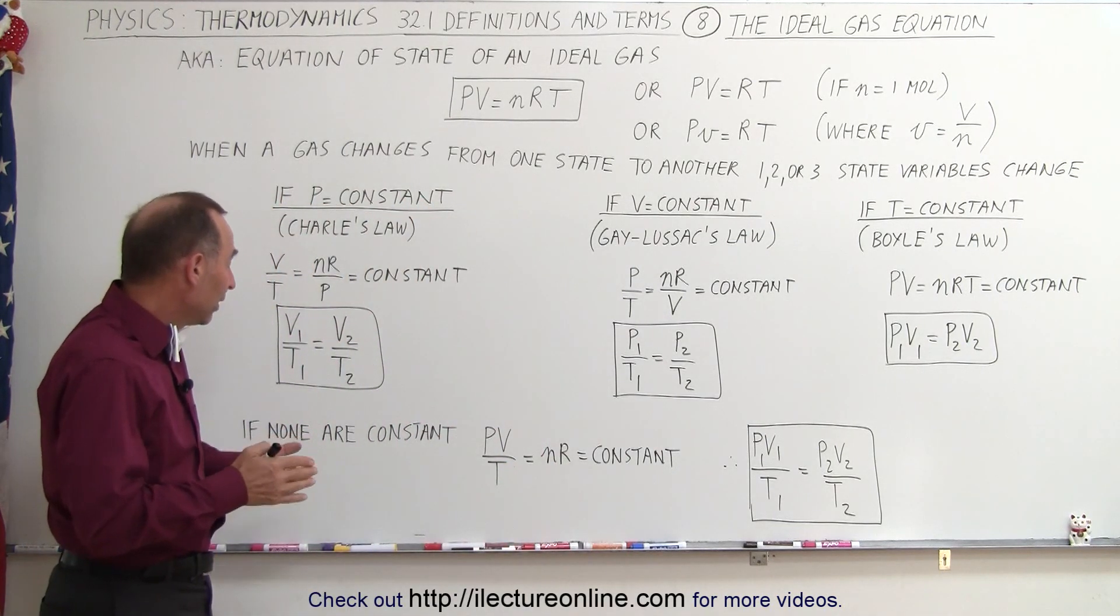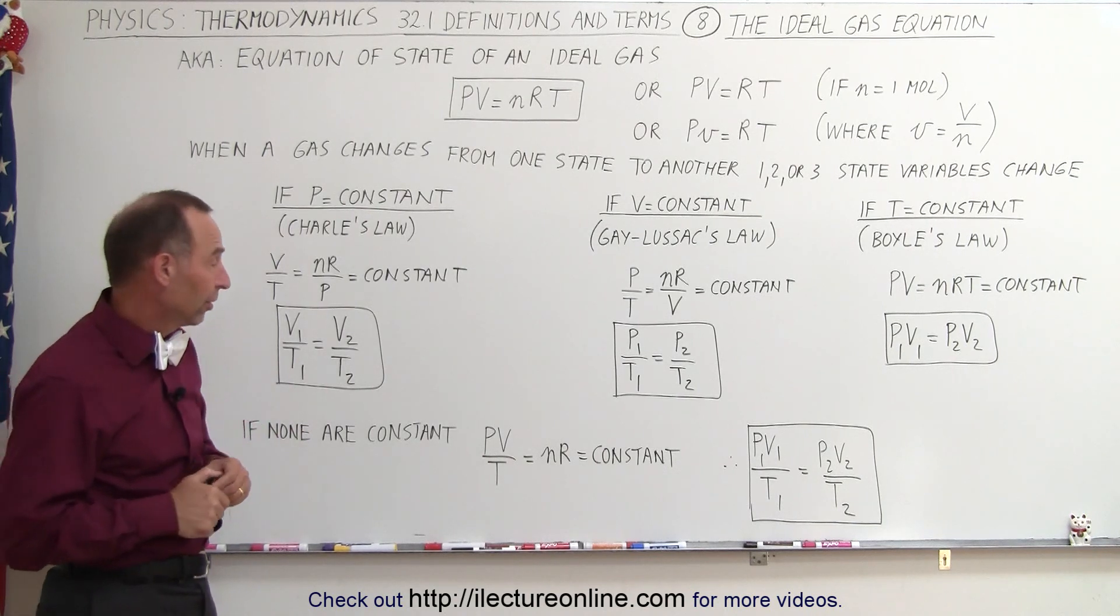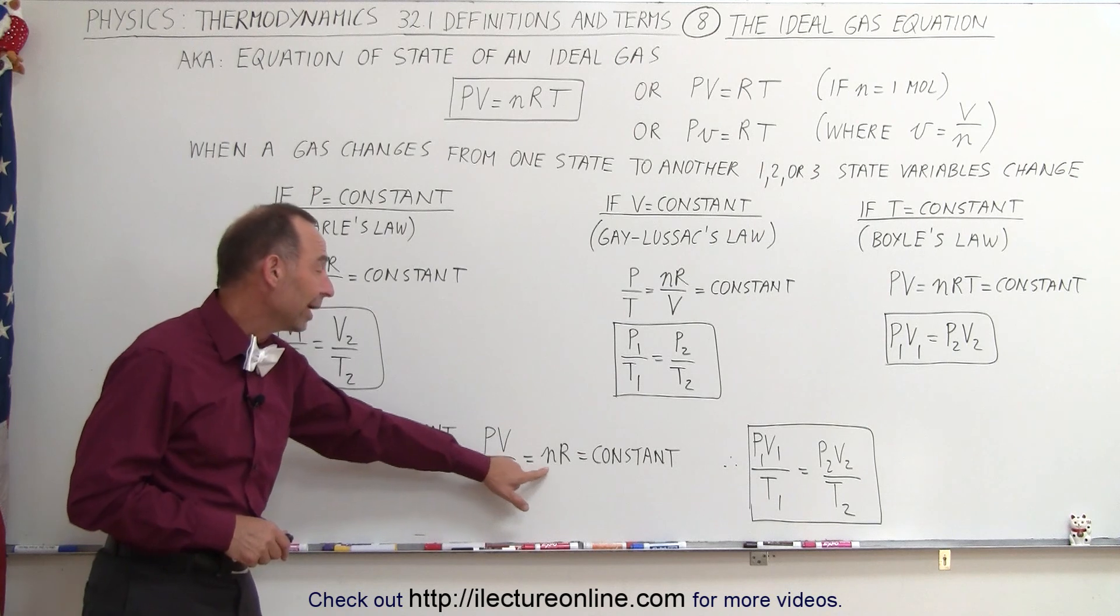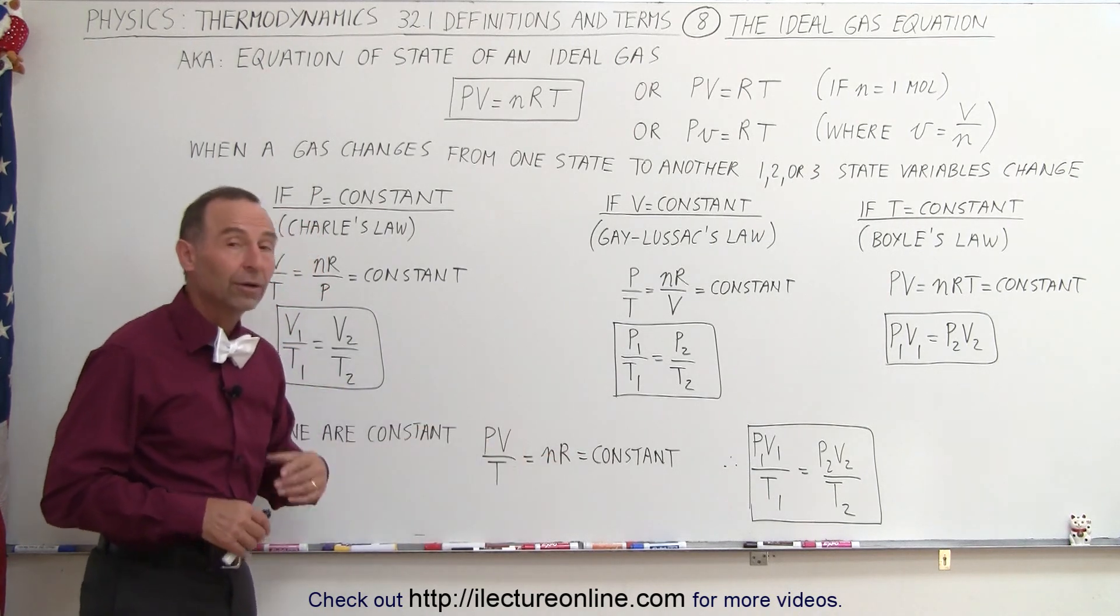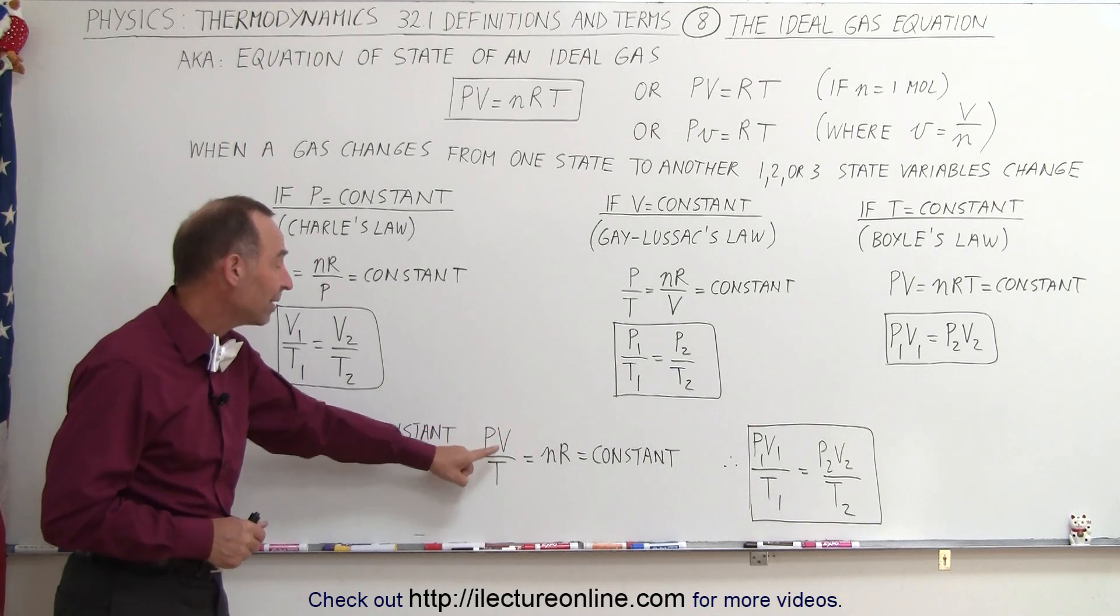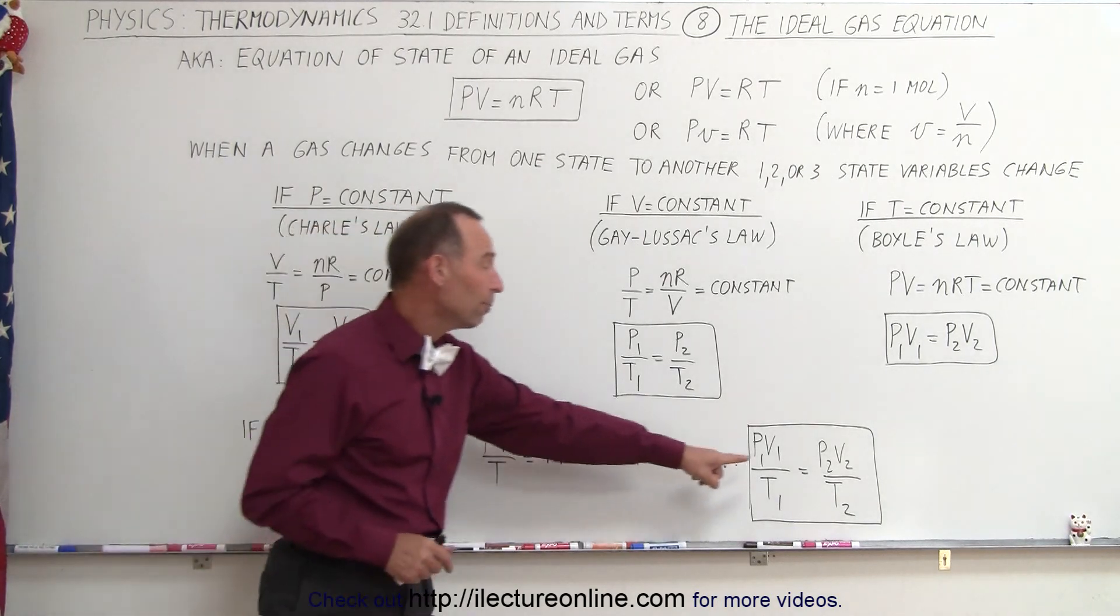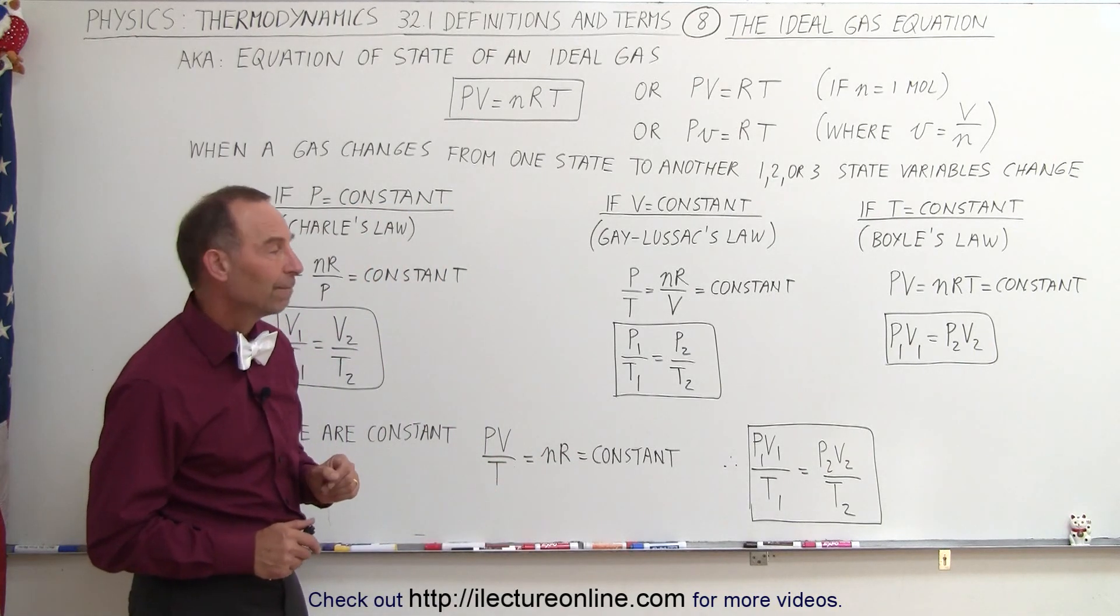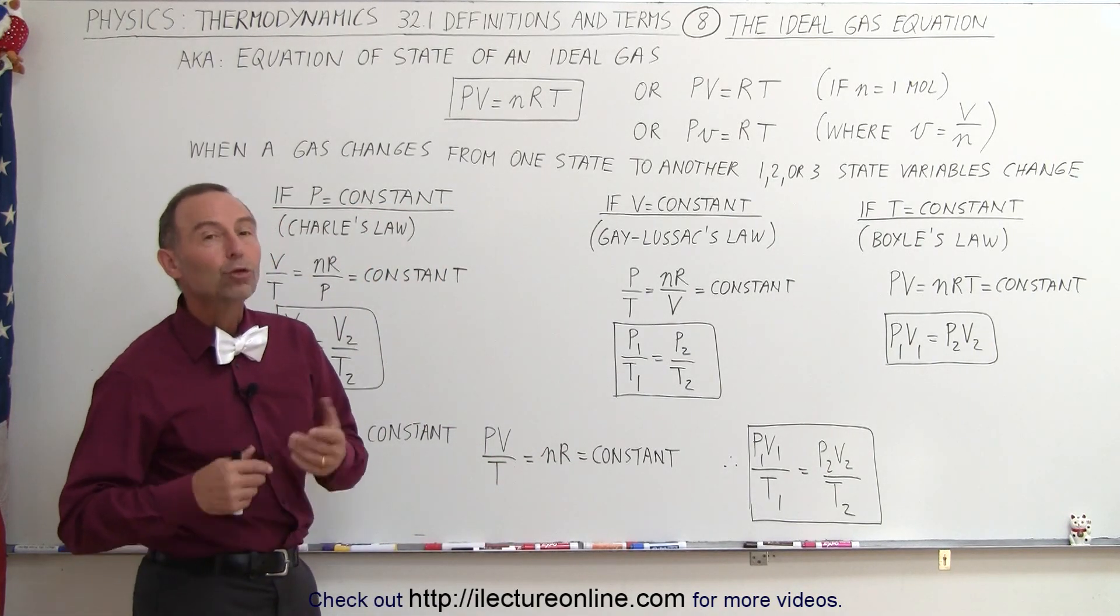But finally, what if none of the three are constant? Then we can write that PV divided by T is equal to nR, and of course n times R is a constant. And then we can say that P times V divided by T of the first state must equal P times V divided by T of the second state. Now, if you don't know, per se, which of the three situations you have,